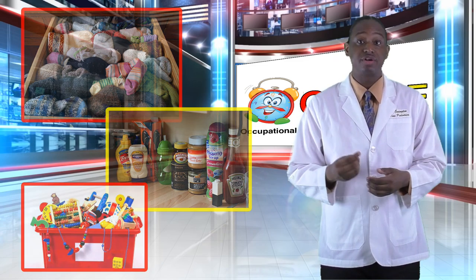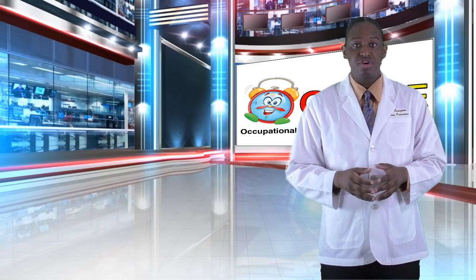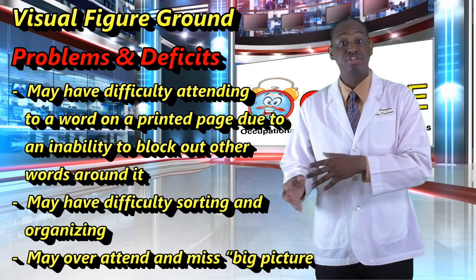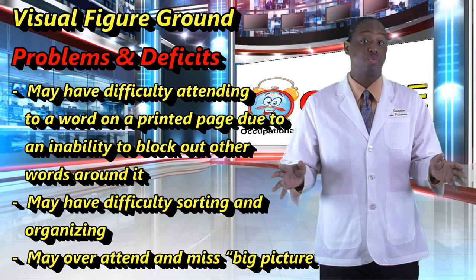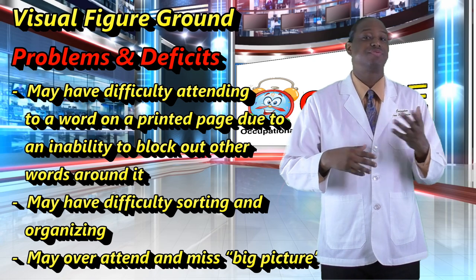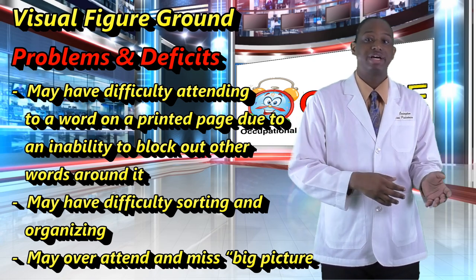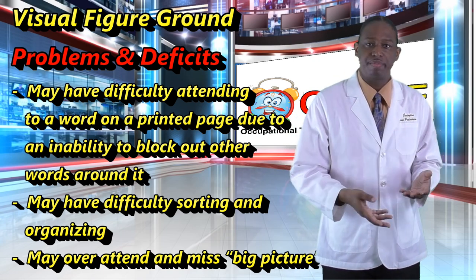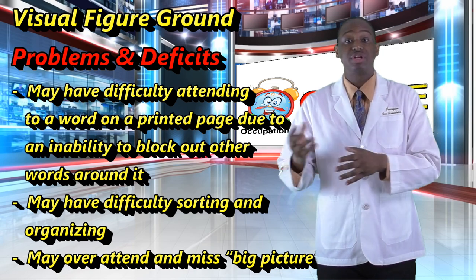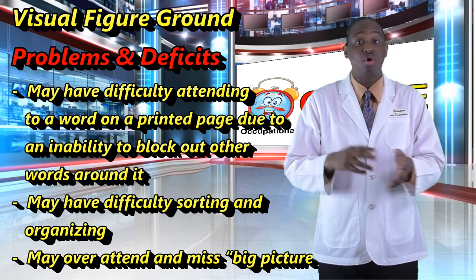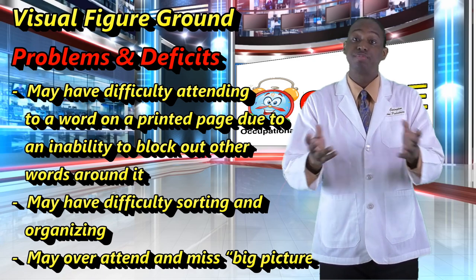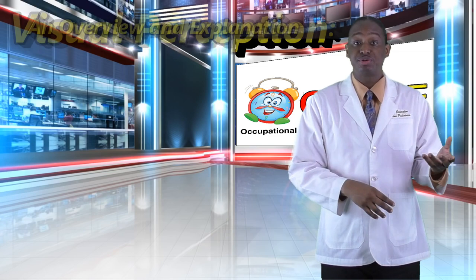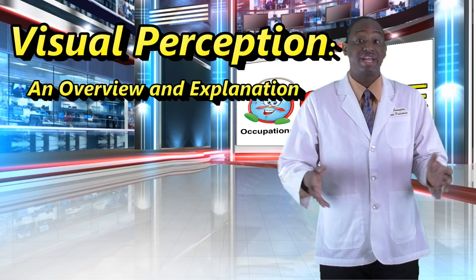Deficits in visual figure ground can cause problems in various areas. You may have difficulty attending to a word on a printed page due to an inability to block out all the other words on the page around it. You may have difficulty sorting and organizing personal belongings. You may appear disorganized or careless in your work to others. You can over-attend to details and miss the big picture, or overlook details and miss important information. So now you have a brief overview of visual perceptual skills and how they play into all of our everyday lives.